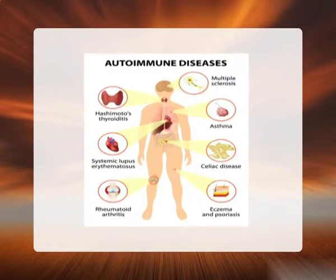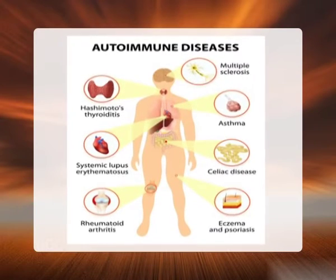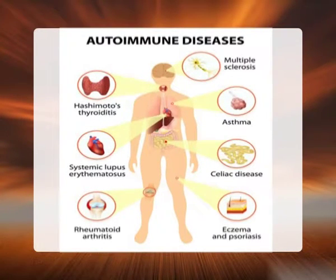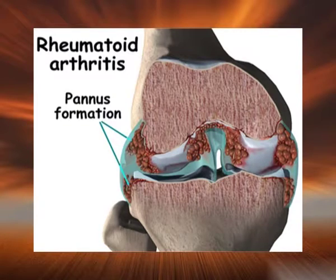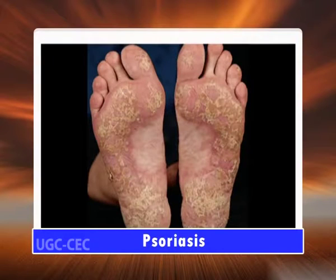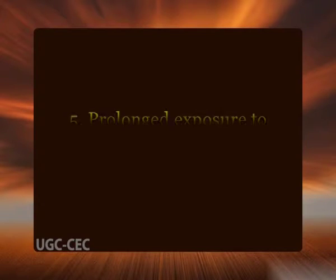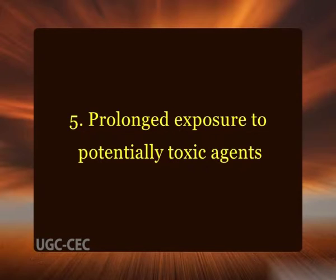Under certain conditions, immune reactions develop against the affected person's own tissues, leading to autoimmune diseases. In such diseases, auto-antigens evoke a self-perpetuating immune reaction that results in tissue damage and persistent inflammation. Autoimmunity plays an important role in several common and debilitating chronic inflammatory diseases such as rheumatoid arthritis, inflammatory bowel disease, and psoriasis.